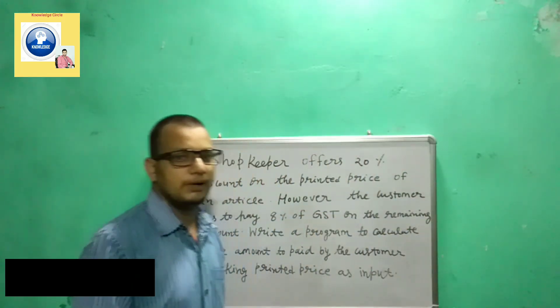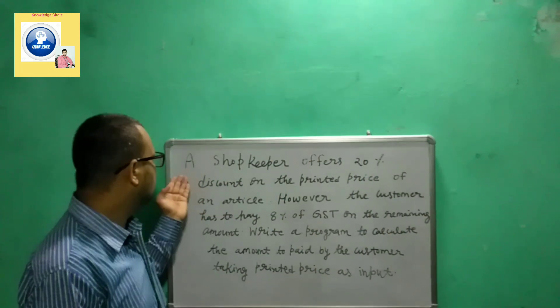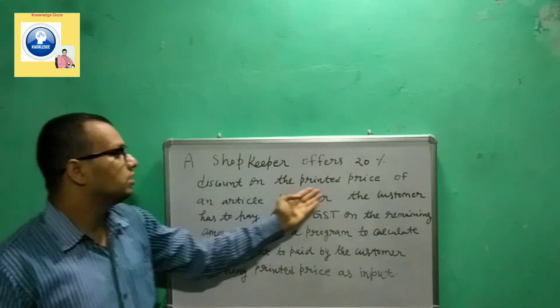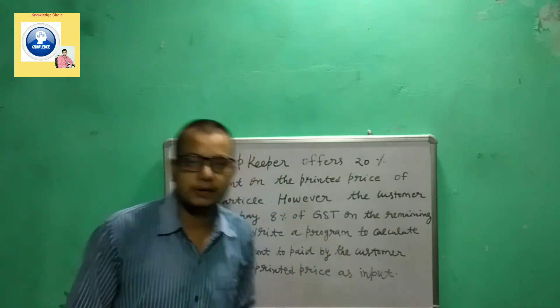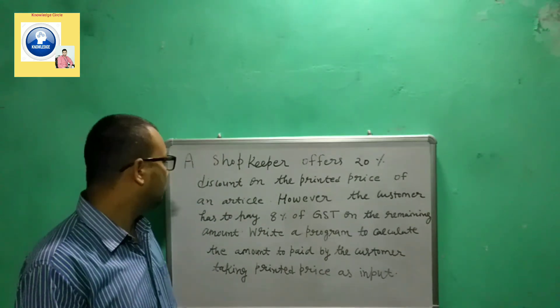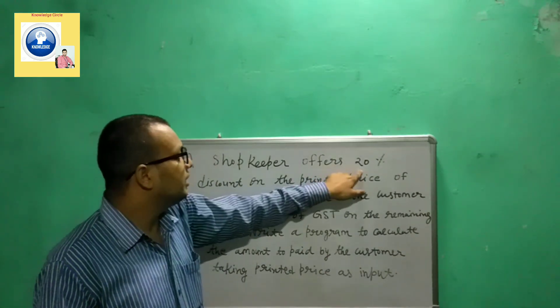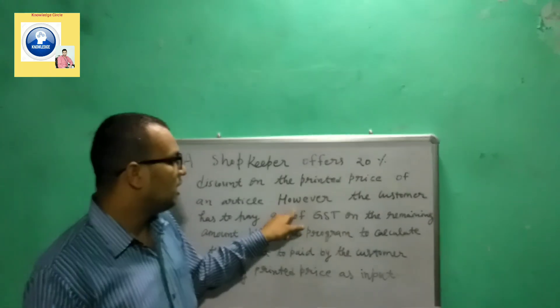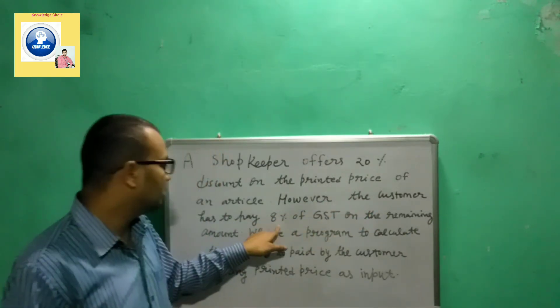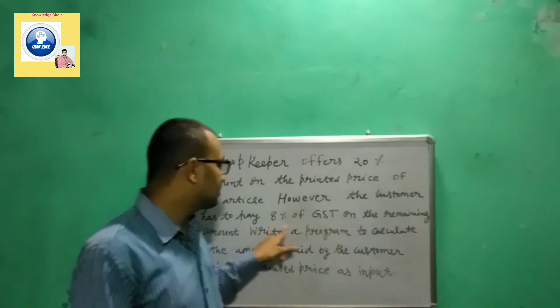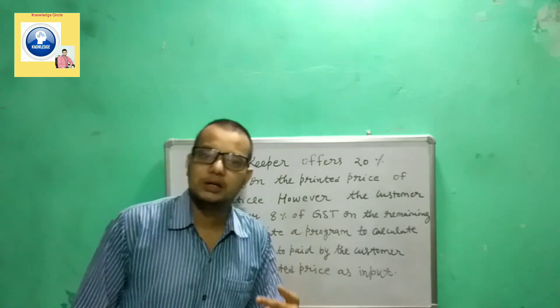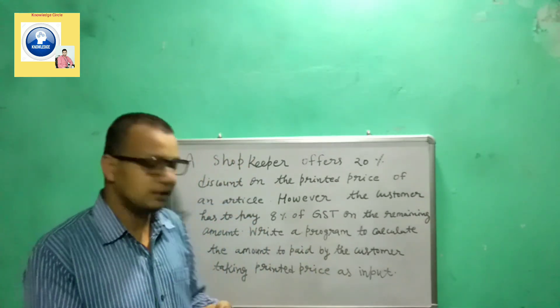Let's see the question first and then we will see the code. A shopkeeper offers 20% discount on the printed price of the article. After the discount, the customer has to pay 8% GST on the discount amount.